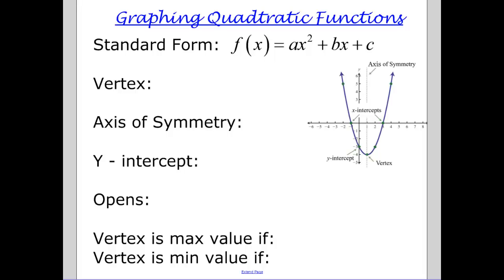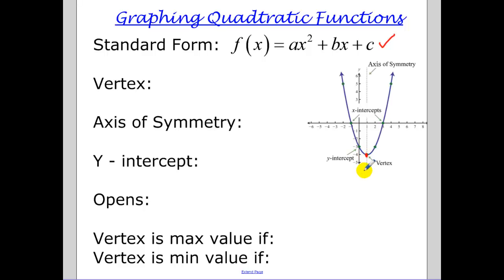Today we're going to be talking about graphing quadratic functions. The standard form of a quadratic function is given here, so make sure you write that down. The graph of a quadratic function looks like a U, and the lowest point or the highest point would be the vertex.